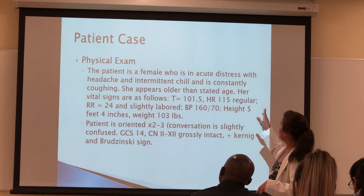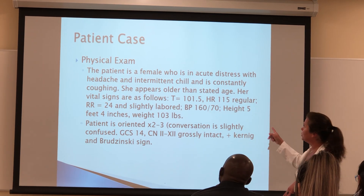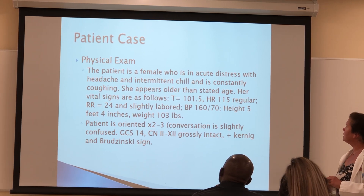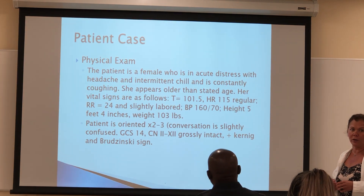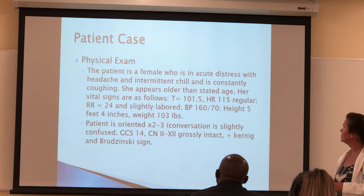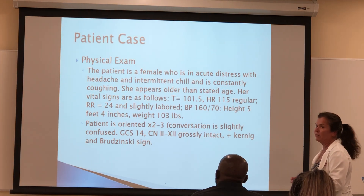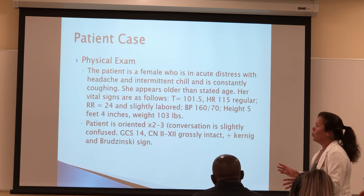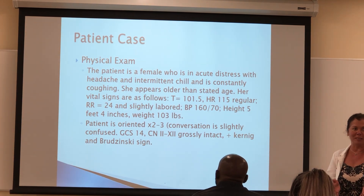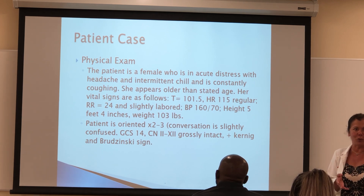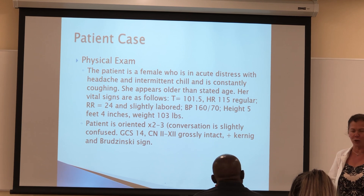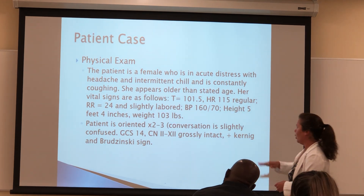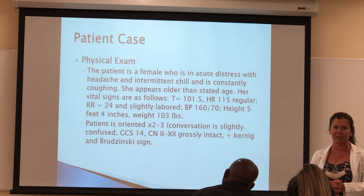Physical exam: she is in acute distress with headache and intermittent chills and coughing. Temperature 101.5, heart rate 115, respiratory rate 24 — the CURB-65 cutoff was more than 30, so still at 2. Blood pressure 160/70, which is not part of the criteria because BP has to be low. GCS of 14, all cranial nerves intact, but positive Kernig and Brudzinski signs.